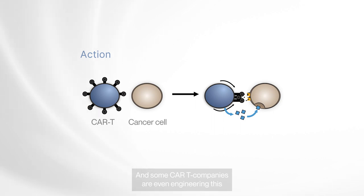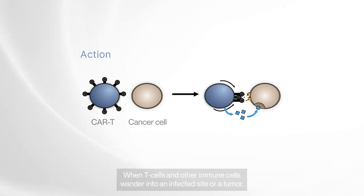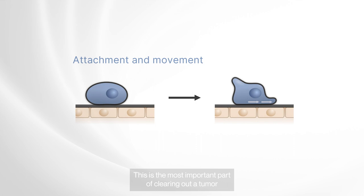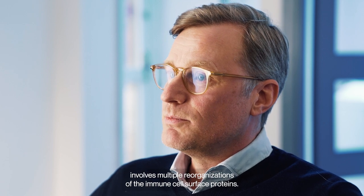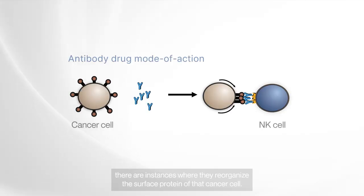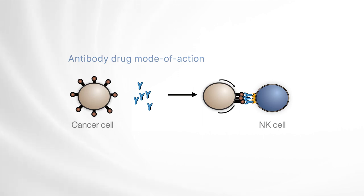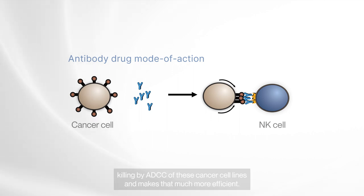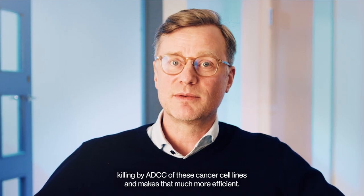The action of CAR T cells on cancer cells also involves reorganization of the surface proteins of the CAR T cells, and some CAR T companies are even engineering this spatial organization to make the CAR T's more efficient. When T cells and other immune cells wander into an infected site or a tumor, they need to form a front and a back end in order to move and to transmigrate between endothelial cell layers. When antibody-based drugs bind to cancer cells, there are instances where they reorganize the surface proteins. For example, rituximab binds CD20 on cancer cells, pulling all the CD20 to one end, clustering the antibodies, which triggers NK-mediated killing via ADCC of these cancer cell lines, making that much more efficient.